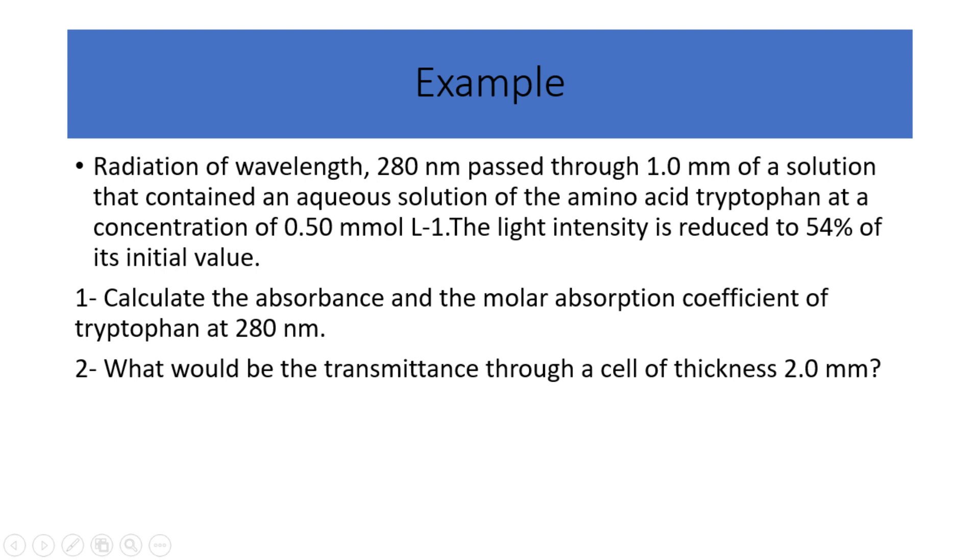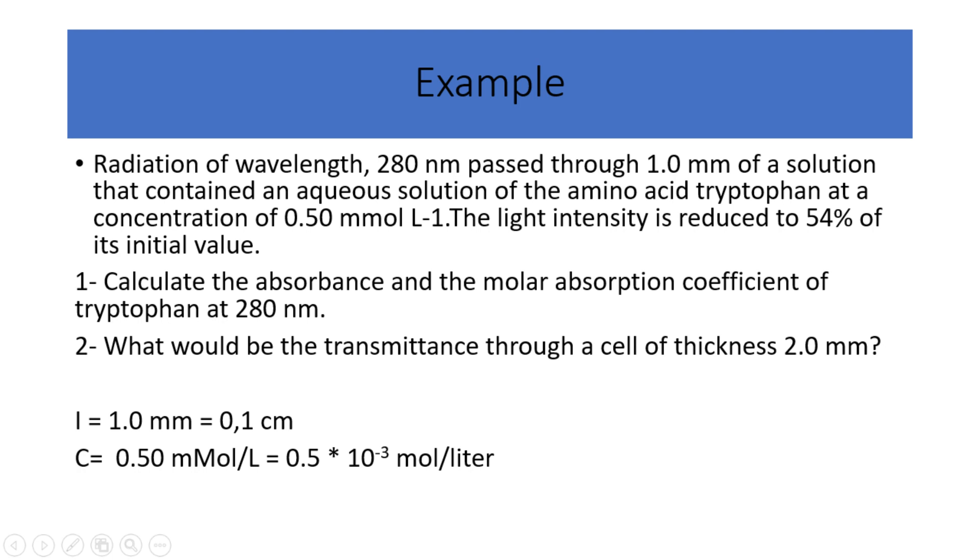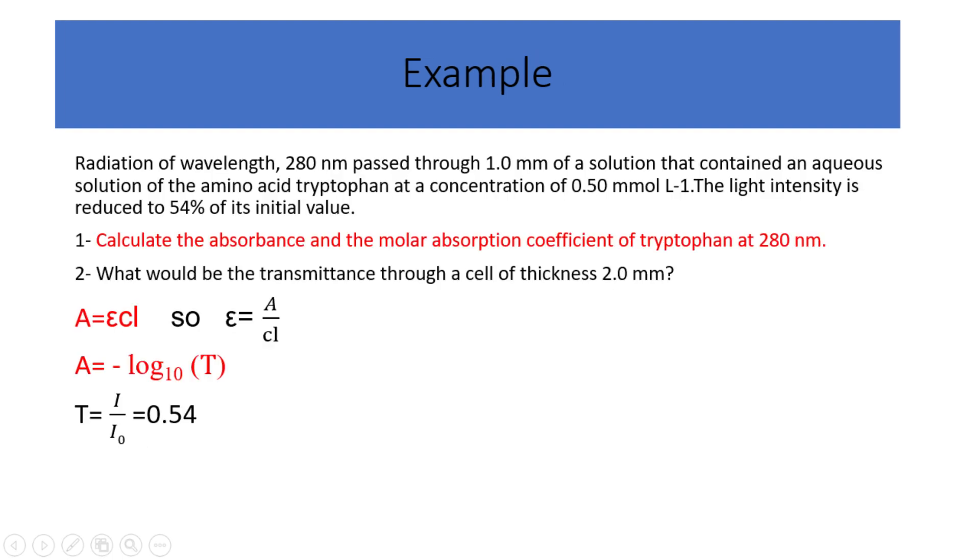Firstly, we should convert into units we usually use in Beer-Lambert law. So, 1 millimeter is equal to 0.1 centimeter. Similarly, 0.50 millimoles per liter equals 0.5 times 10 to the power of negative 3 molars per liter. To calculate the molar absorption coefficient, we have the equation, A equals epsilon times C times L. So, epsilon equals absorbance divided by C times L. But, we should calculate the value of absorbance first.